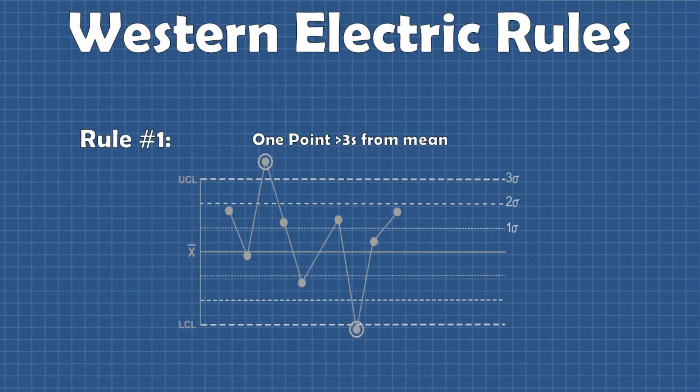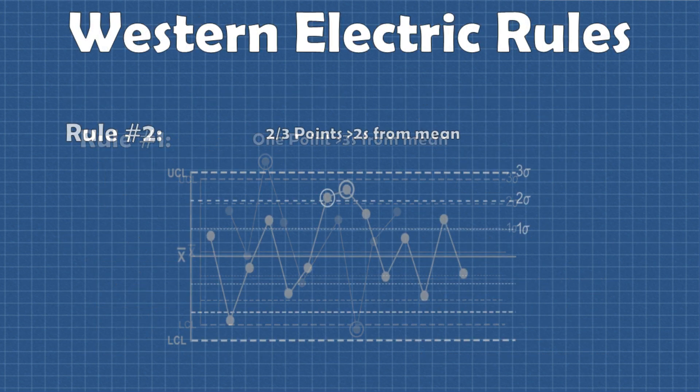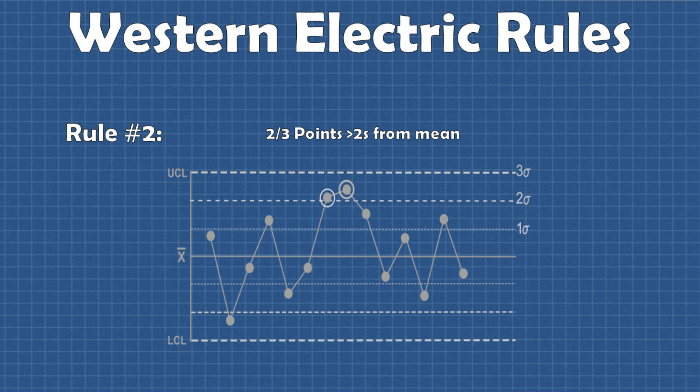Their standard included three additional rules that could be used to increase chart sensitivity and detect smaller process shifts. Western Electric's rule number one was the same as Shewhart's. Western Electric's second rule is a test to see if two out of any three sequential points are greater than two sigma from the mean on the same side.